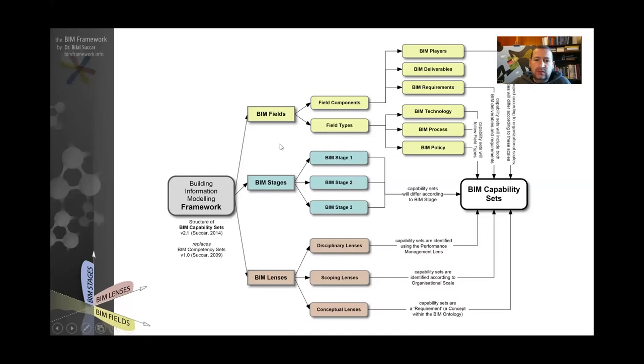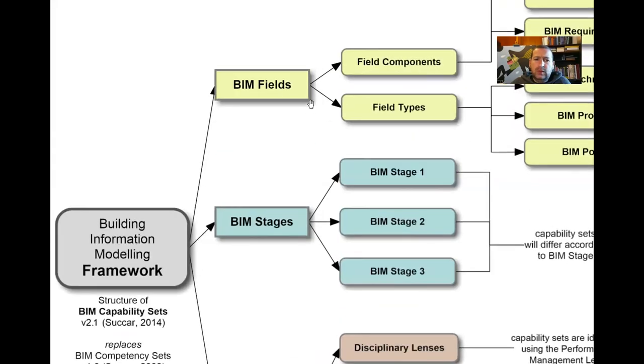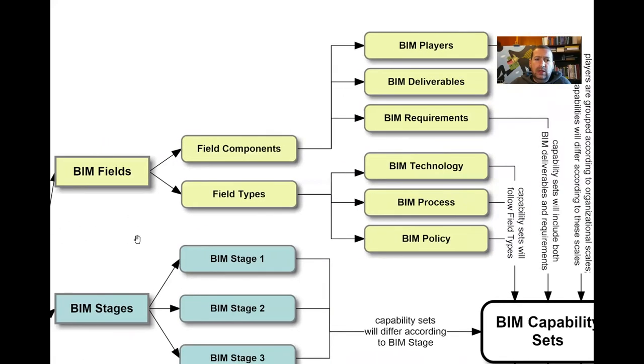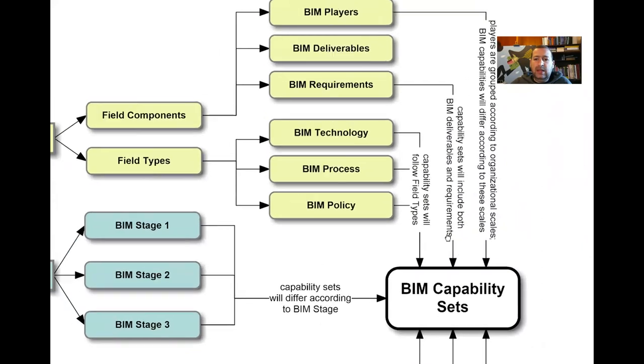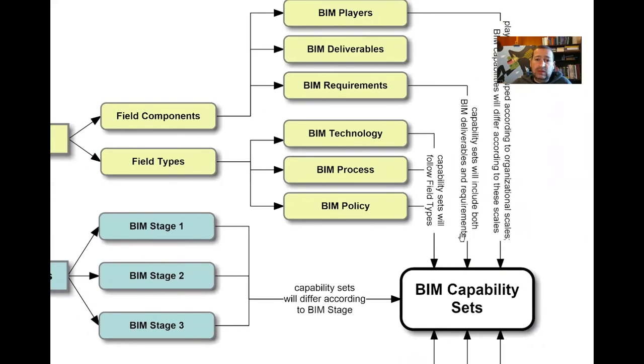So, let's zoom in a bit. Within BIM fields, if you remember from the BIM fields video, each field will have either components or types, meaning we've got technology, process, and policy field types. Within each of these, we've got players, BIM variables, and BIM requirements. A BIM capability set, which includes lots of steps, is actually a requirement.